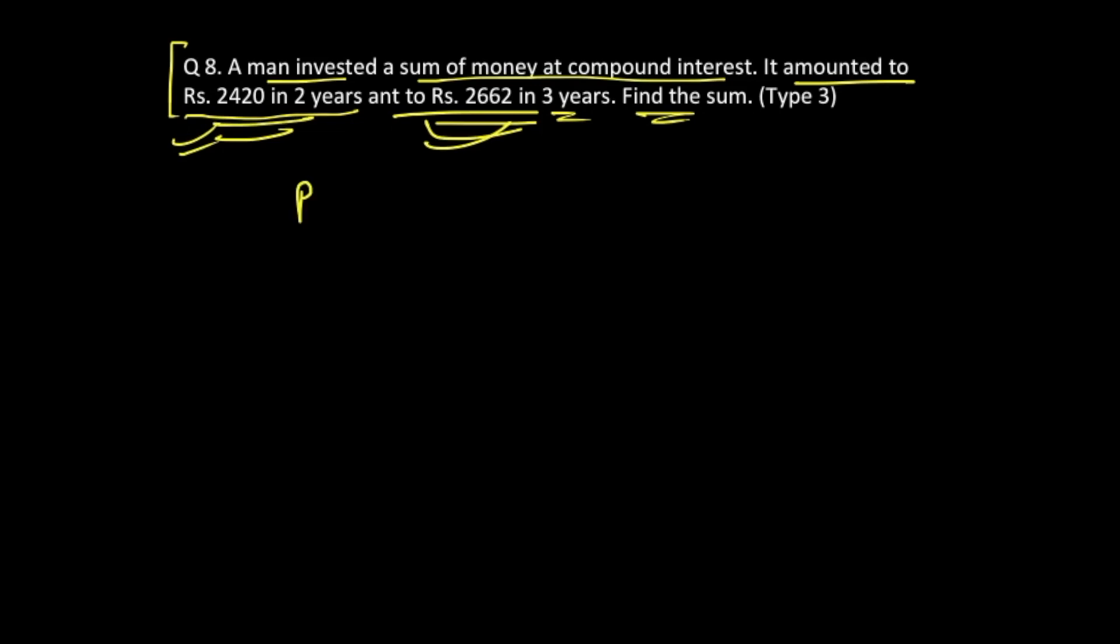So again, the principal value which we don't know becomes 2420 in two years, and with one more year from here, that is after three years from here, this becomes 2662. Right? So now what you are going to do is you're going to use the difference between these two.